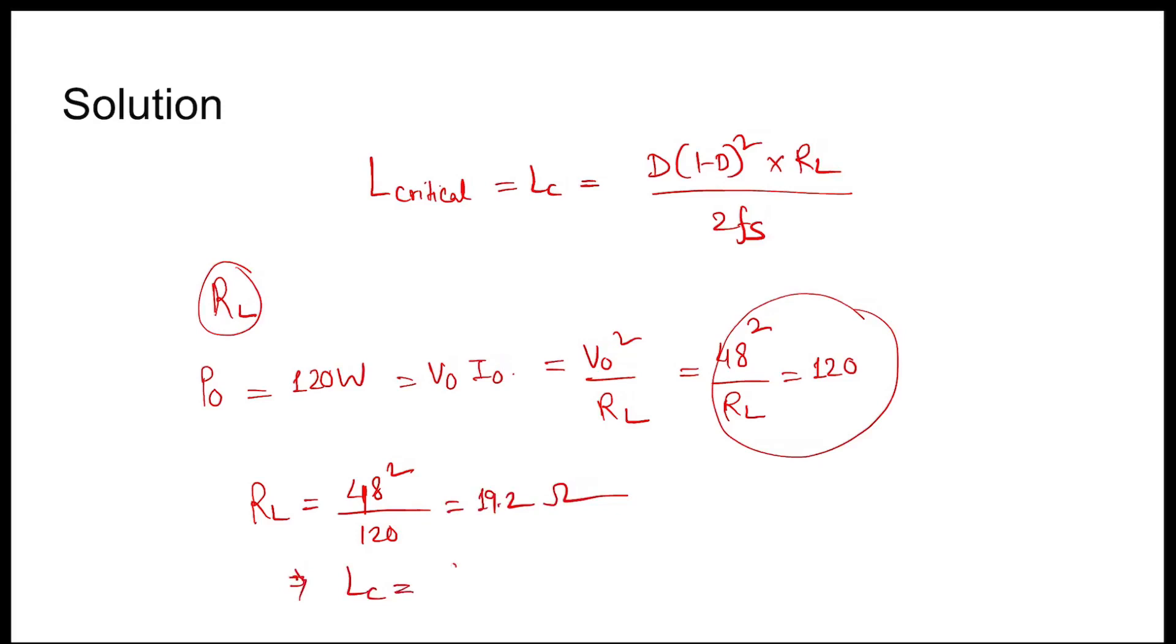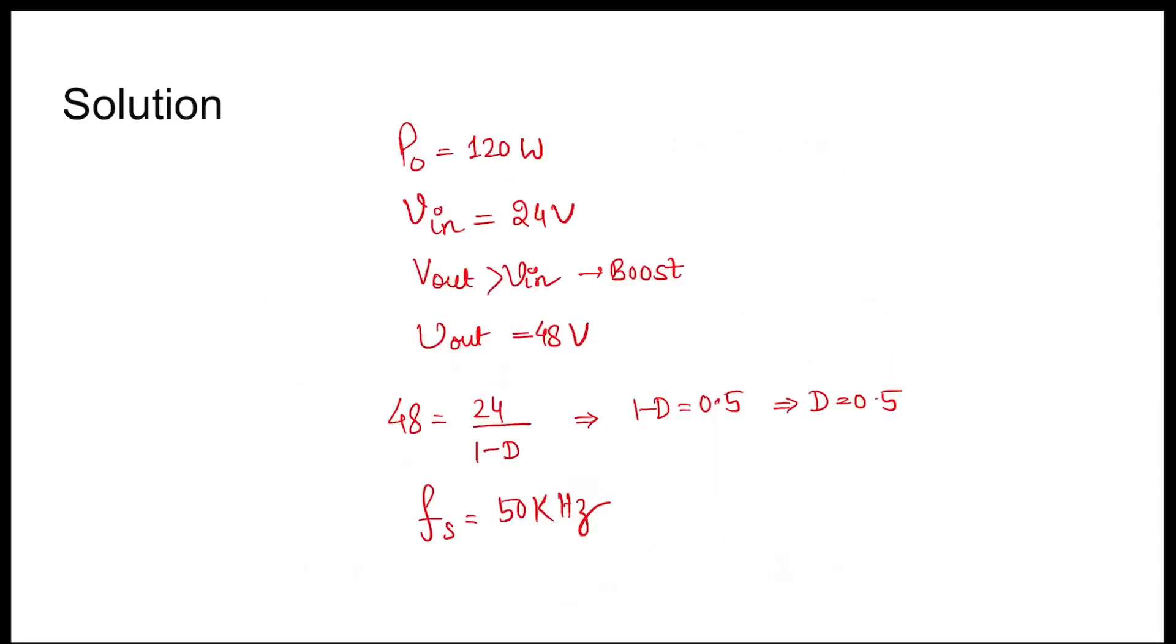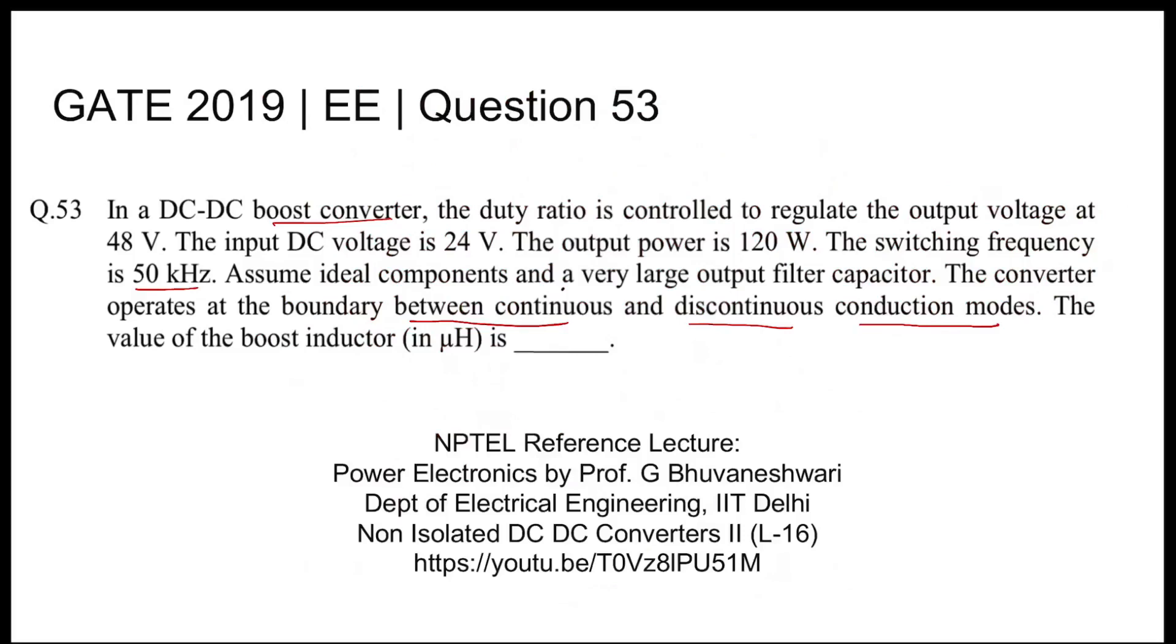Lc is equal to 0.5 times 0.5 squared times 19.2 divided by 2 times 50 times 10 to the power 3 in Henrys, which is 0.024 millihenries. And the question is asking us in microhenries, so 24 microhenries will be the answer.